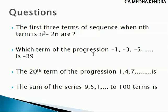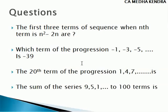The next question: which term of the progression minus 1, minus 3, minus 5, and so on, is minus 39? They have given the progression and the Nth term value; we need to find N. By subtracting second term minus first term and third term minus second term, if the common difference is equal, it is arithmetic progression. Here, minus 2 is added each time, so it is arithmetic progression. We use the formula TN equal to A plus (N minus 1) into D, knowing A and D to find the term number.